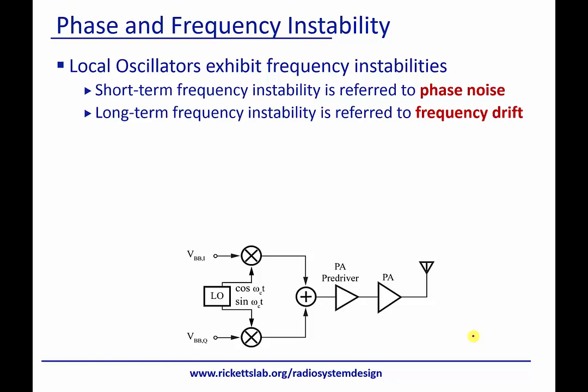Another non-ideality is phase and frequency instability. The oscillators that we use aren't perfect, and there are two things that aren't perfect about them. The first is that the frequency is not fixed in time — it actually drifts over time. It's not a large drift; it might be a few fractions of a percent. This can happen because you're holding the phone with your hand and heating it up, or it's cold outside — temperature is one of the biggest causes of frequency drift.